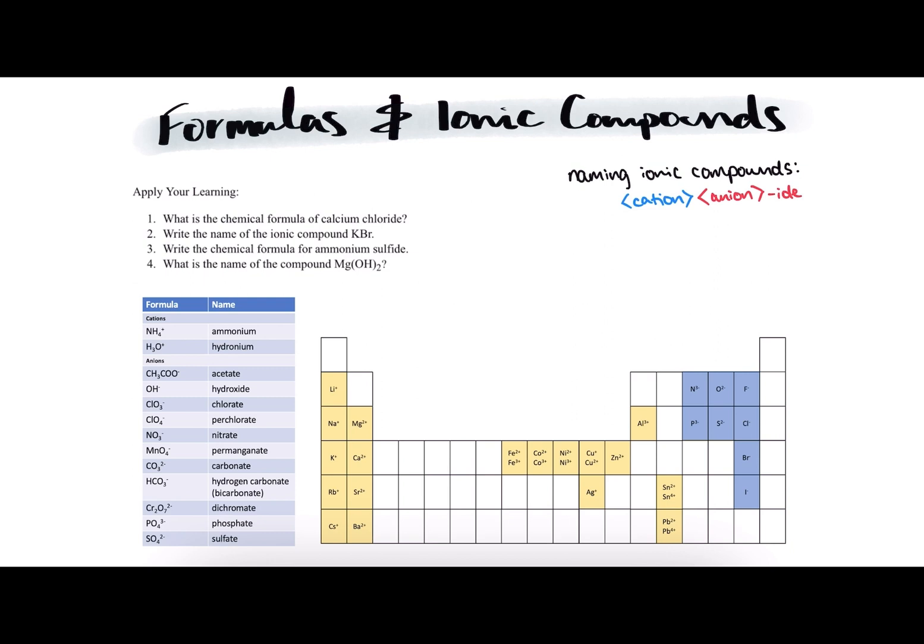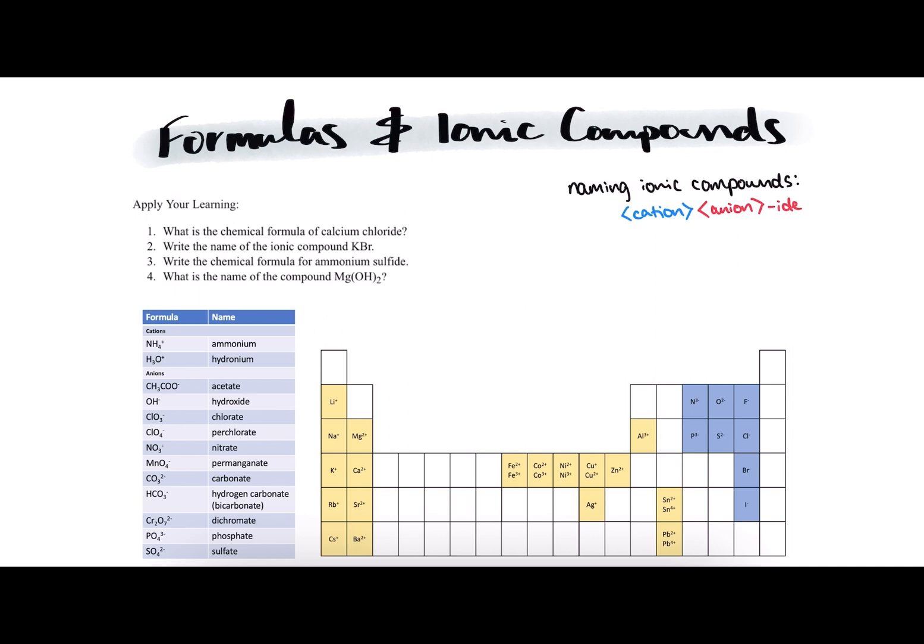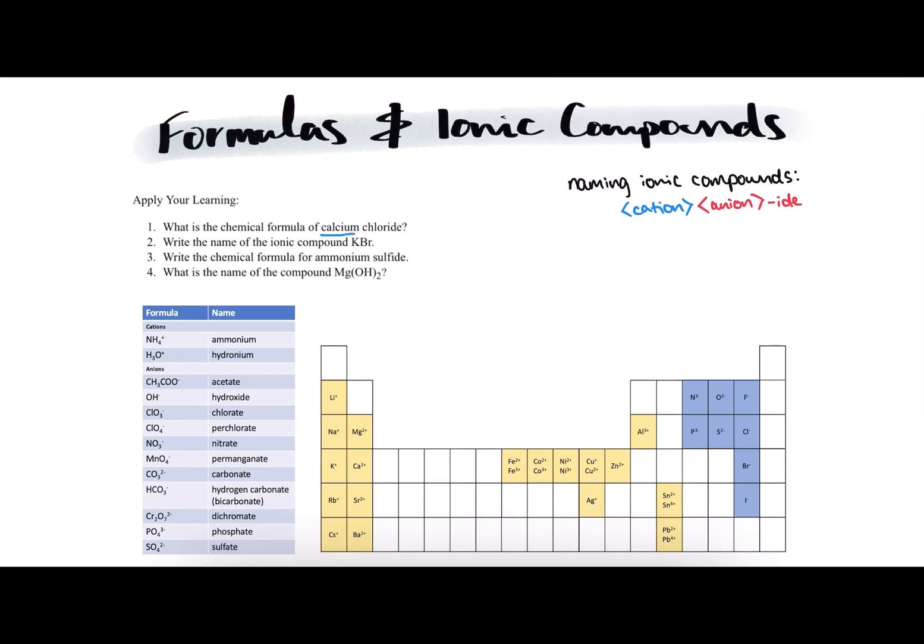Let's look at number one now. Number one is asking, what is the chemical formula of calcium chloride? We see the suffix ide attached to our name, so we can assume that it's an Ionic Compound. Going off of the nomenclature, we see that calcium will be our cation and chlorine will be our anion.